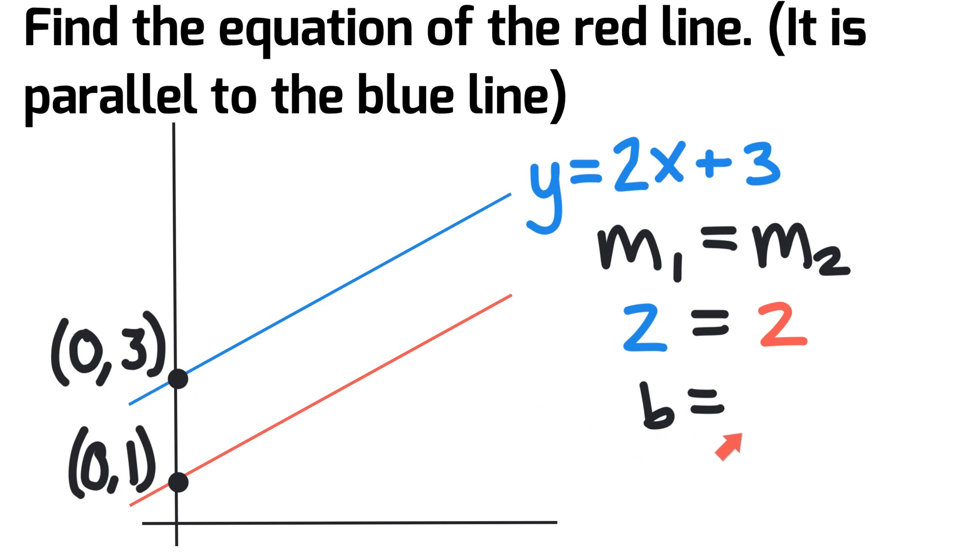In the red line, our B value is going to be 1 because it crosses the y-axis at a point of 0 comma 1.